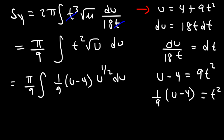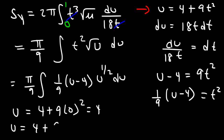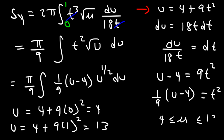Initially the values of t were 0 to 1, but we need to change them. When t is 0, u is 4. When t is 1, u is 13. So u will vary between 4 and 13.